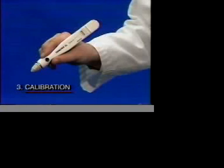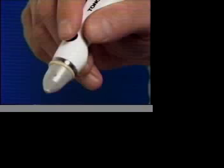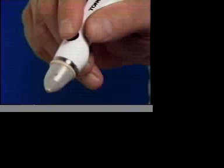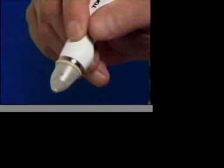That will help assure you that the instrument is measuring accurately. To check calibration, turn the TonoPen on by pressing the activation button for about half a second.